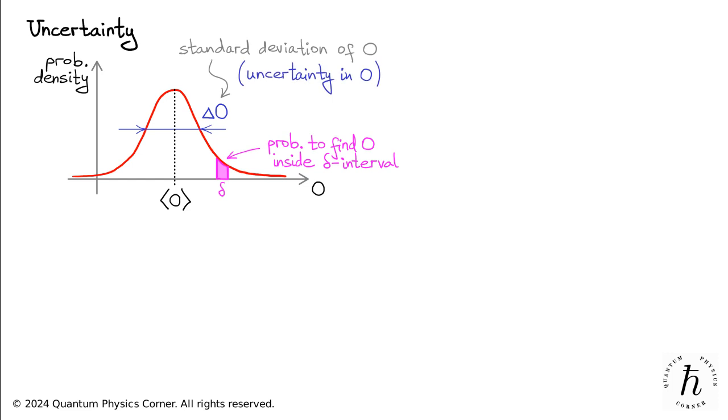Let's review what it means and how it is calculated. Instead of looking at the value of O itself, we focus on the deviation of O from its mean, specifically O minus O mean. One might naively think that the average of this quantity would quantify the width of the probability distribution.